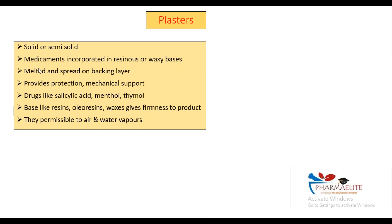Next, talking about plasters, which is the last part. Plasters are either solid or semisolid. They include different mechanisms with regards to protection — they provide protection and also provide support. You can include different drugs like salicylic acid, menthol, and thymol. Most important from this part is to remember the examples of your bases. Bases like resins, oleoresins, and waxes give firmness to the product. They are also permeable to air and water, and their major work is to provide protection and mechanical support.